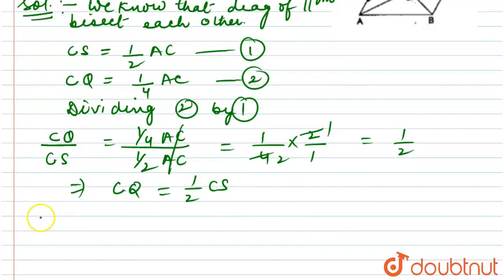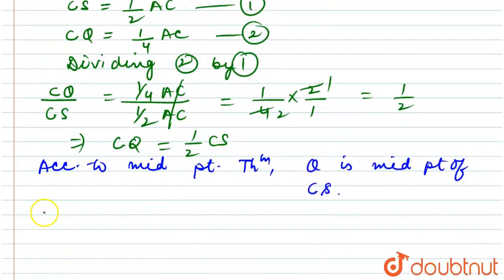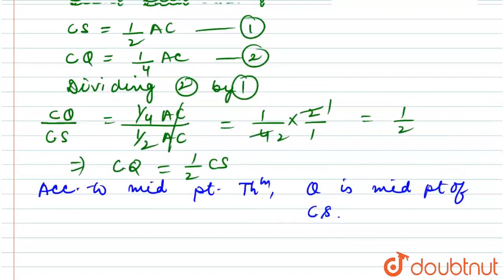According to the midpoint theorem, Q is the midpoint of CS. So now two triangles are formed.